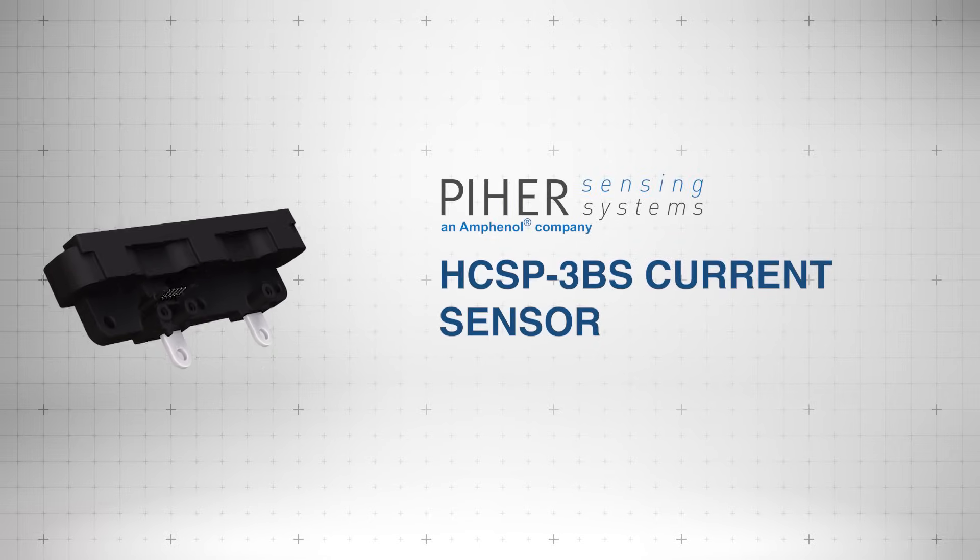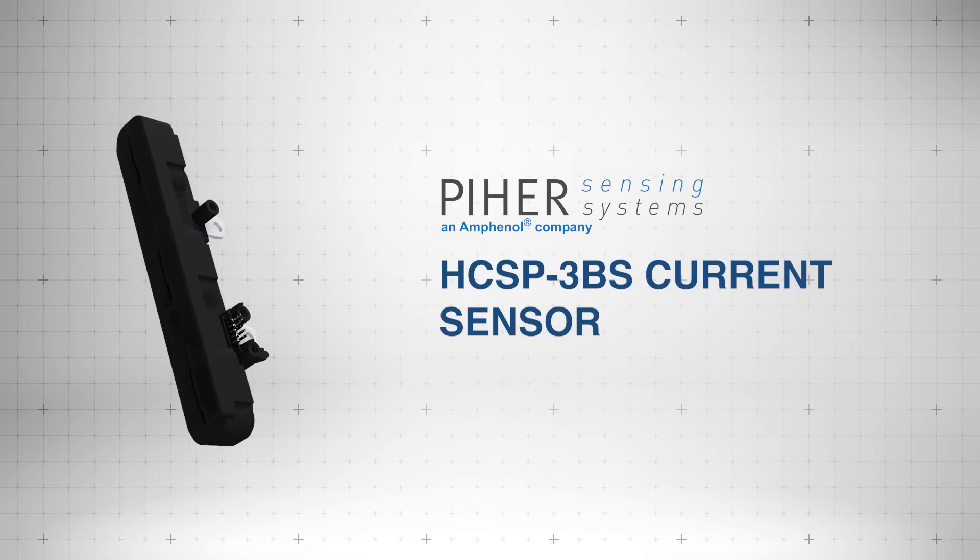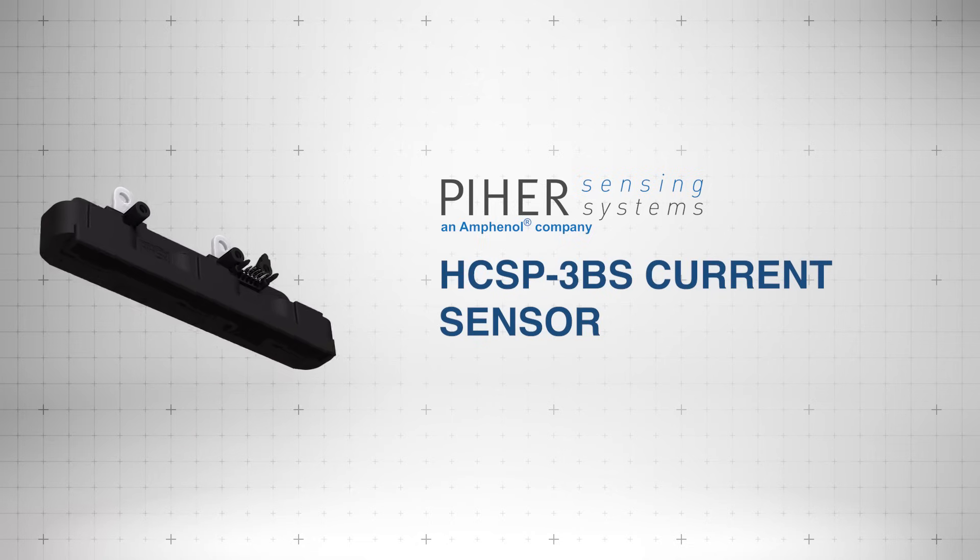The Amphenol Pier HCSP3BS current sensor is a high-performance open-loop sensor designed for accurate AC and DC current measurement in automotive systems.